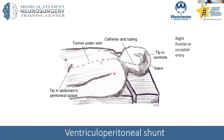In older kids, we can place the shunt into the pleural space — the space around the lungs — where fluid is absorbed by the chest wall. Another option is to place it intracardiac, into the heart, where the fluid drains directly into the bloodstream, very similar to the way you would place a central line.